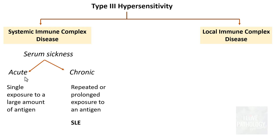A common example of chronic serum sickness is systemic lupus erythematosus. The name serum sickness comes from the historical association with patients who received antiserum derived from horses to combat infections like diphtheria or tetanus. These antiserums contained foreign proteins that acted as antigens, leading to an immune response. Serum sickness manifestations include fever, rashes, arthritis, swollen lymph nodes, and edema.